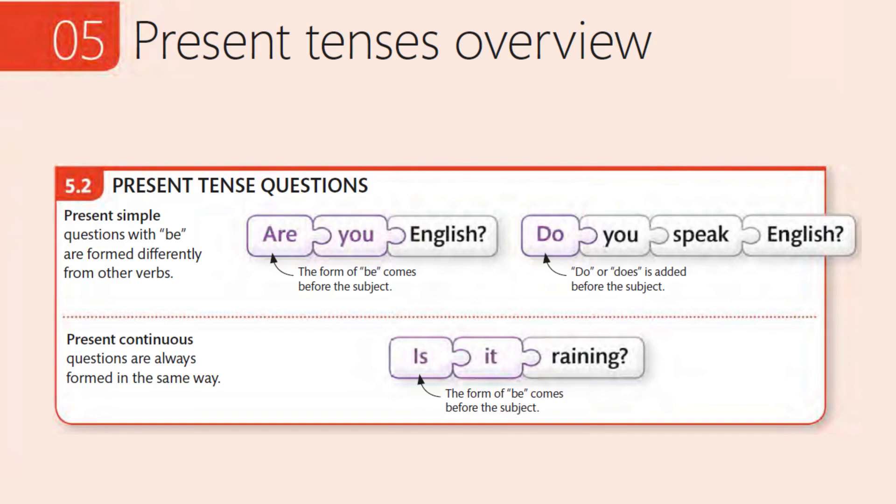Do, or does, is added before the subject. Present Continuous questions are always formed in the same way. Is it raining? The form of be comes before the subject.